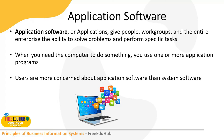Application software gives people, workgroups, and the entire enterprise the ability to solve problems and perform specific tasks. When you need the computer to do something, you use one or more application programs. Users are more concerned about application software than system software because different organizations use different applications to maximize profitability or ease day-to-day tasks — for example, a logistics company uses applications to track items received, sent, warehoused, and delivered.